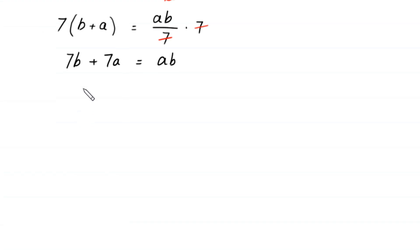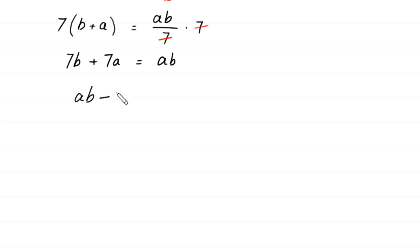Now we move 7b and 7a to the right side. Then this equation becomes ab minus 7b minus 7a is equal to 0.